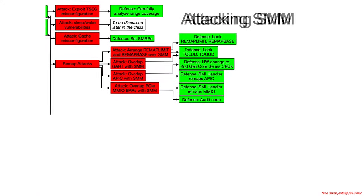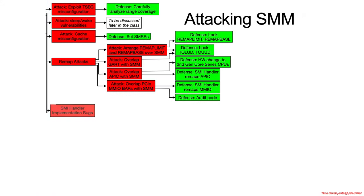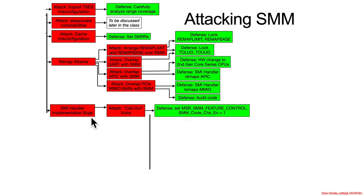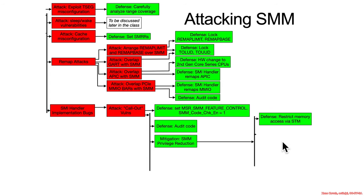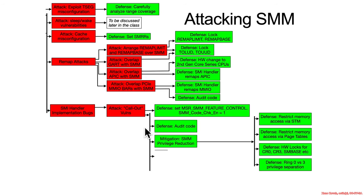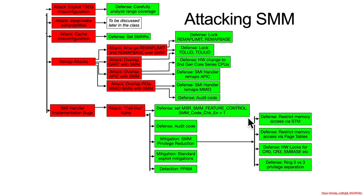We're going to need a little space again - let's keep on expanding. In this section, we're going to see SMI handler implementation bugs. There are going to be multiple categories and a whole bunch of defensive mechanisms. I'm going to be adding a bar here for defensive mechanisms common to the various implementation bugs, and a bar here for privilege reduction options available for everyone. This is going to be a lot of defensive options, but that also means a lot of work for defenders.